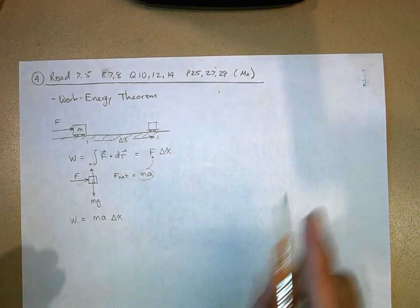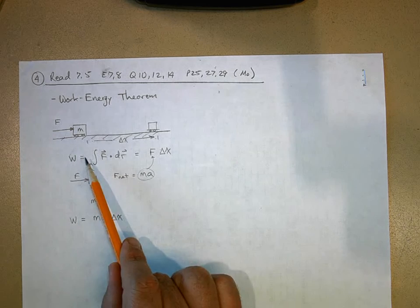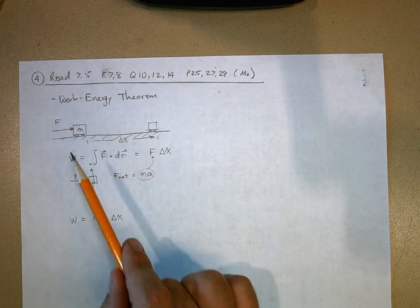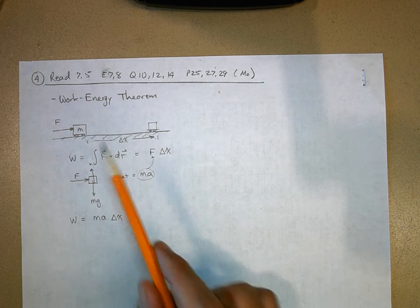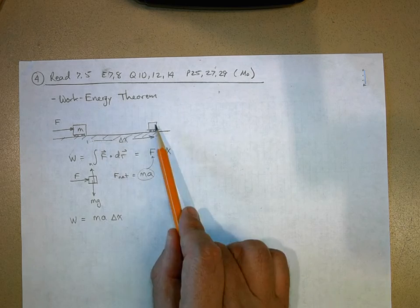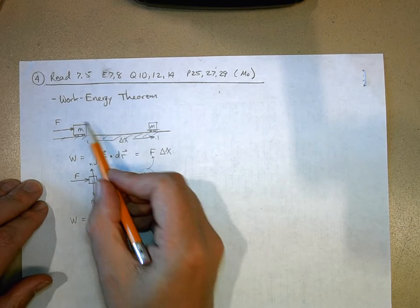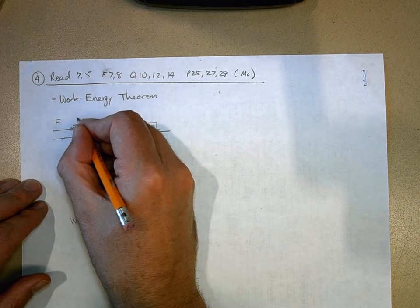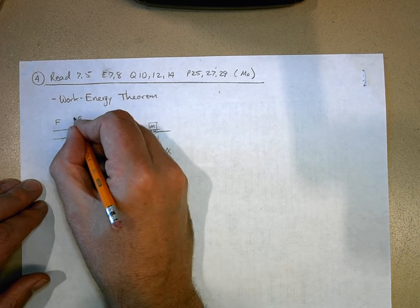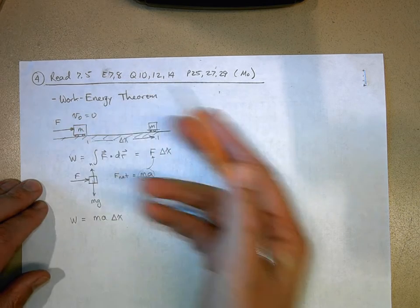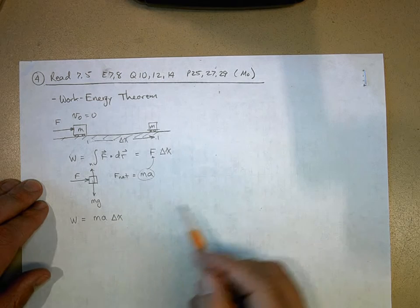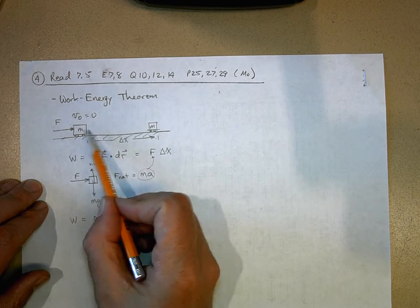This derivation is only true if the force being applied to our object is the net force. So the work done by it is going to be ma, that's our net force, times delta x. Now let's see what we're going to do. I want to get this expression for work in terms of the result of doing work. And the result of doing work is that this thing is going to be moving.